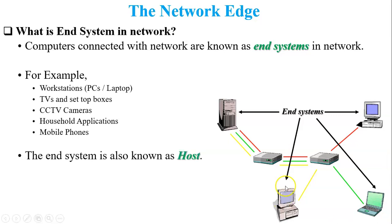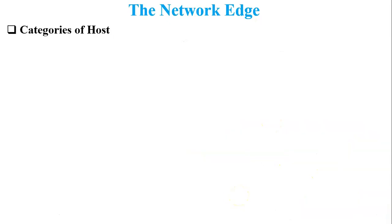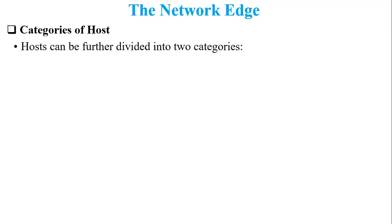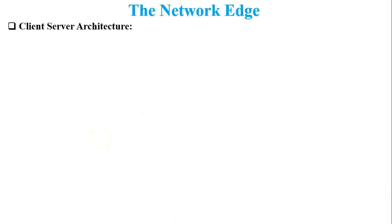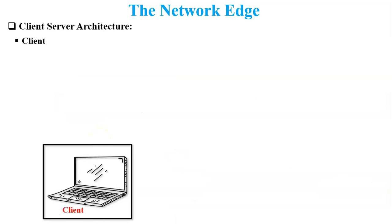In computer network, an end system is also known as a host. PCs, laptops, and servers are also called hosts. Next, categories of host: a host can be further divided into two categories — first is server, and second is client. In this figure, these three end systems consist of two clients and one server, and all three are also called hosts.